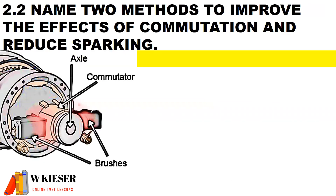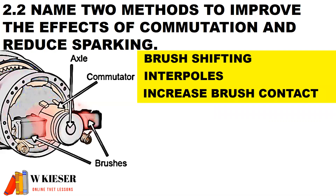Name two methods to improve the effects of commutation and to reduce sparking: brush shifting, interpoles, and increasing the brush contact.